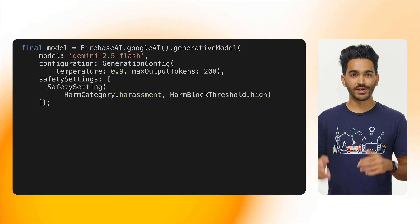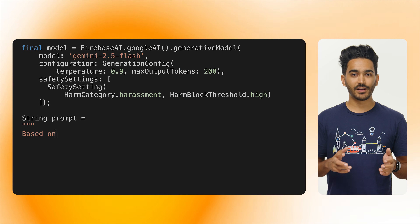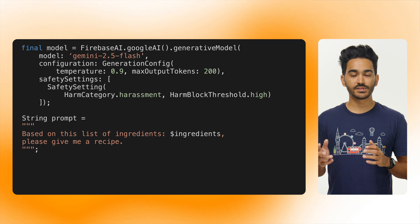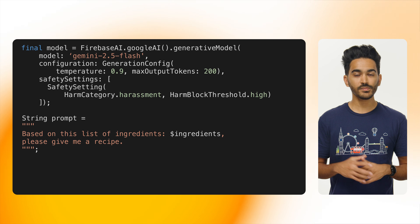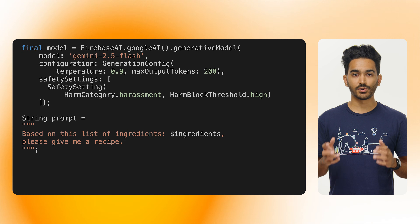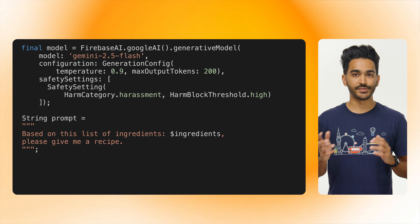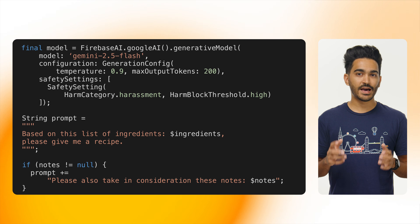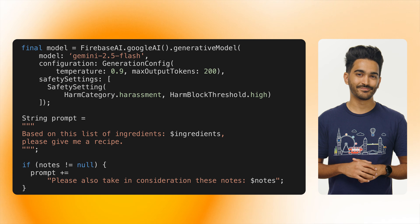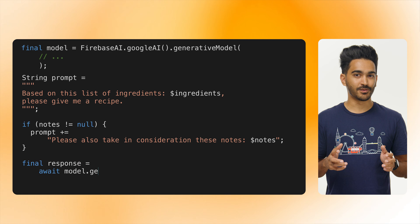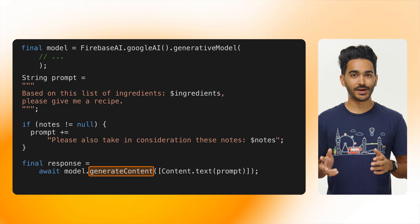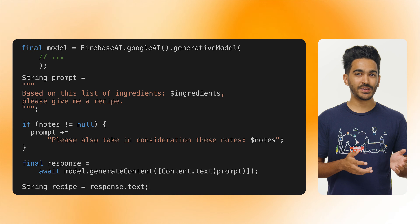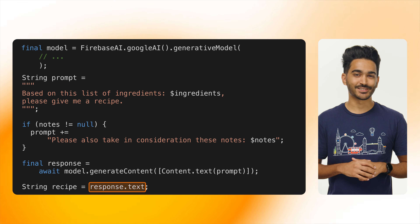Now we can write the function to generate recipes. We'll start by declaring our prompt as a string variable and concatenate the list of ingredients typed by the user. Since we also allow the user to optionally submit their preferences and dietary restrictions, we need to check if there are any, and if so, add them to the prompt as well. Once we have our prompt, we can call generateContent, passing Content.text as an argument. And once the model returns the generated recipe, we can read it using response.text.